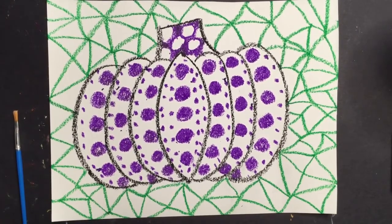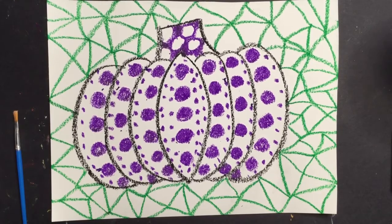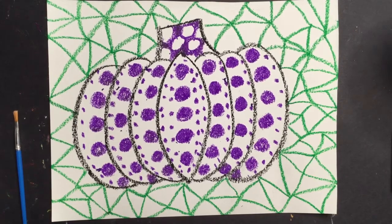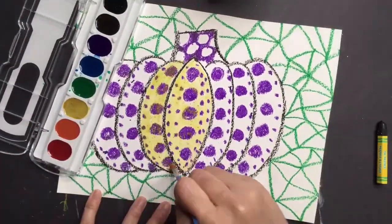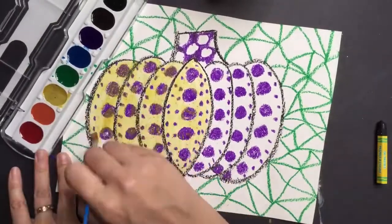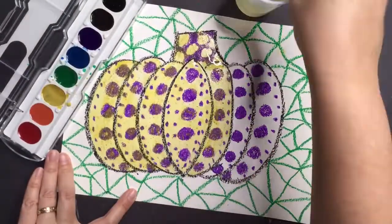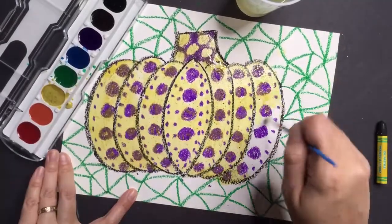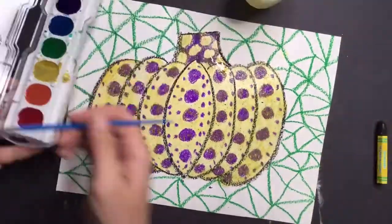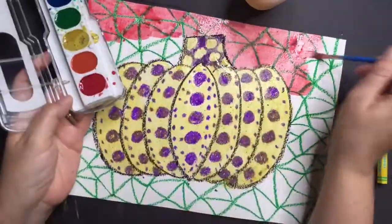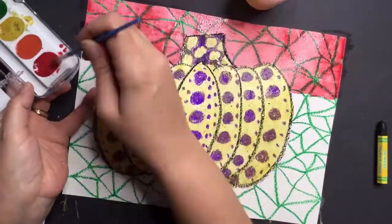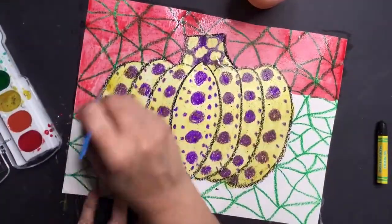Y por último, puedes agregar el color que deseas al resto de tu arte. Voy a pintar mi calabaza de amarillo y mi fondo de rojo.